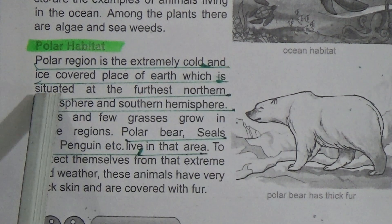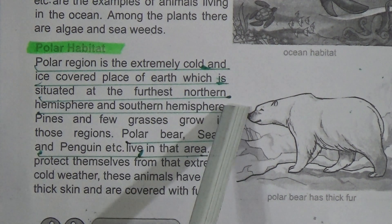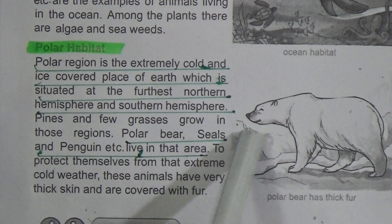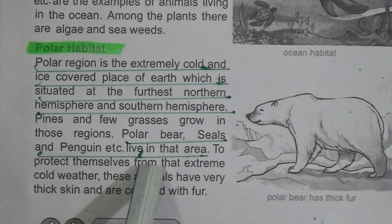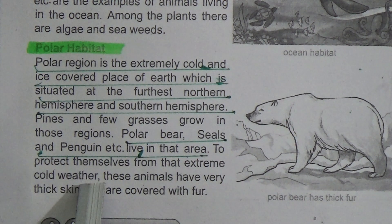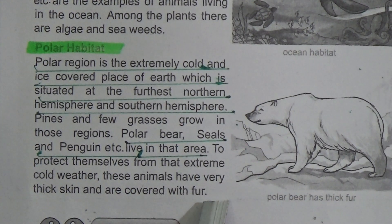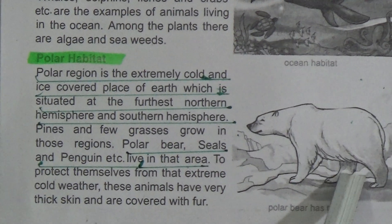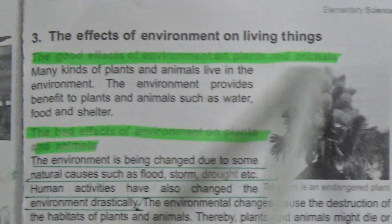Polar habitat: the polar region is an extremely cold and ice-covered place on earth, situated at the farthest northern and southern hemispheres — underline this line. Pines and few grasses grow in those regions. Polar bears, seals, and penguins live in that area — underline this line. To protect themselves from extreme cold, these animals have very thick skin and are covered with fur.